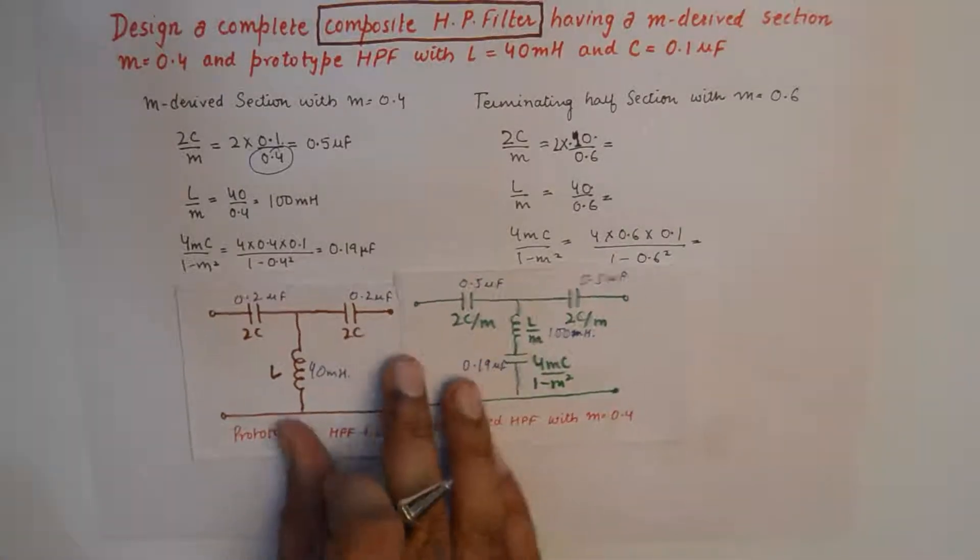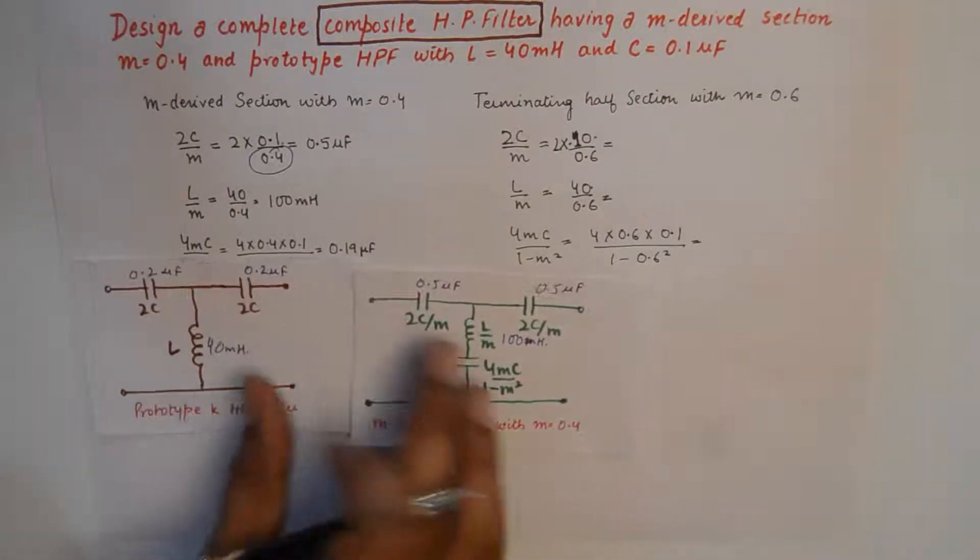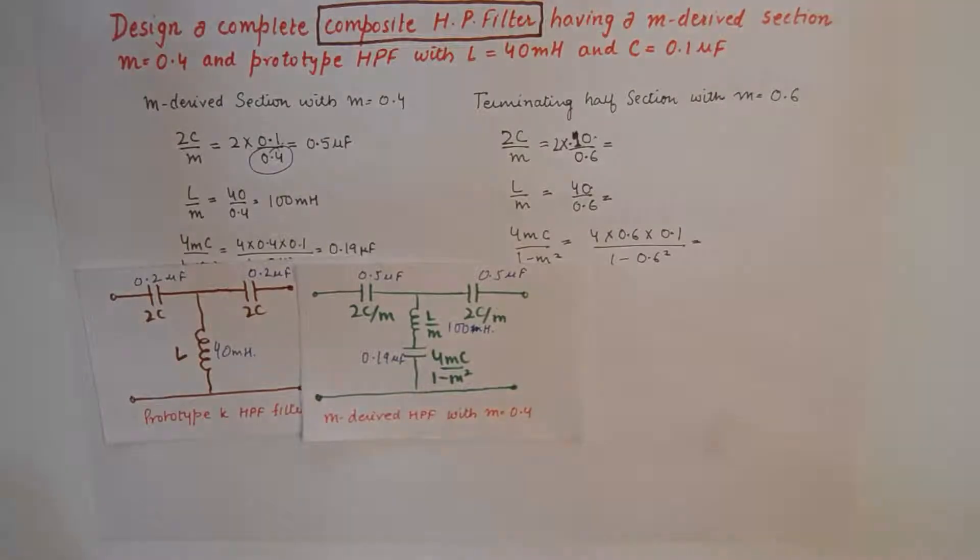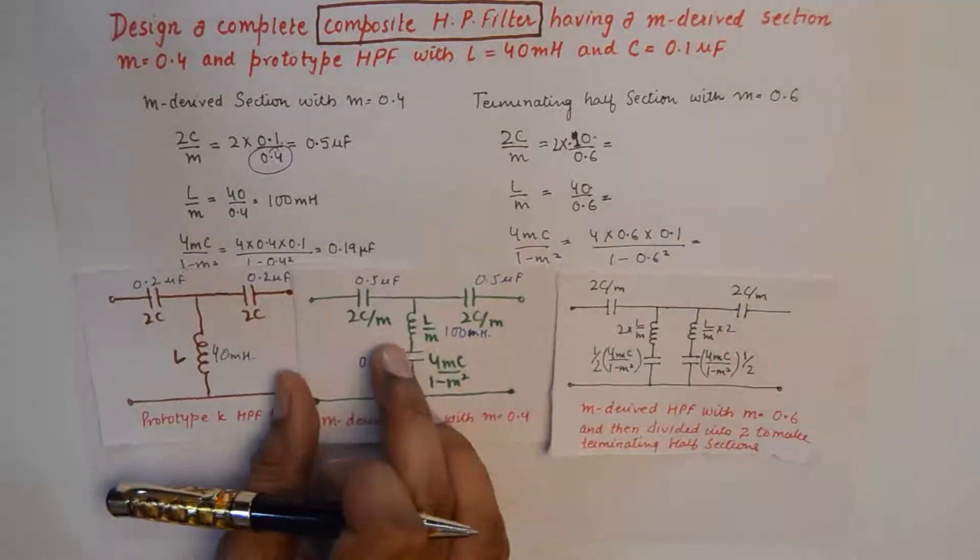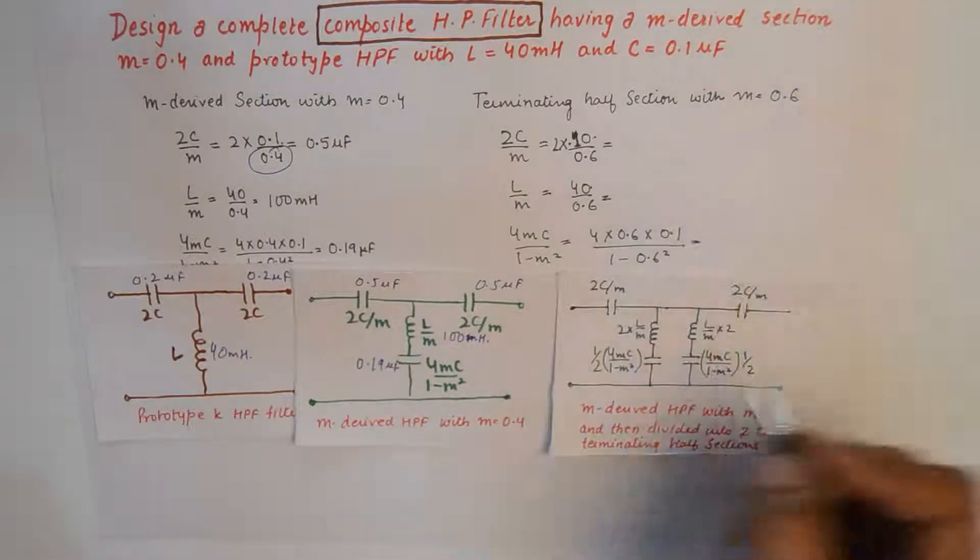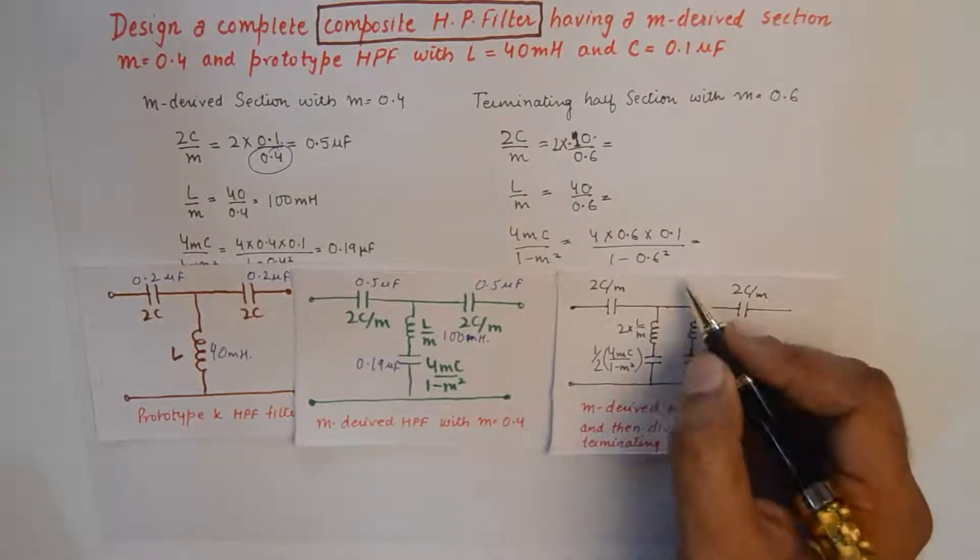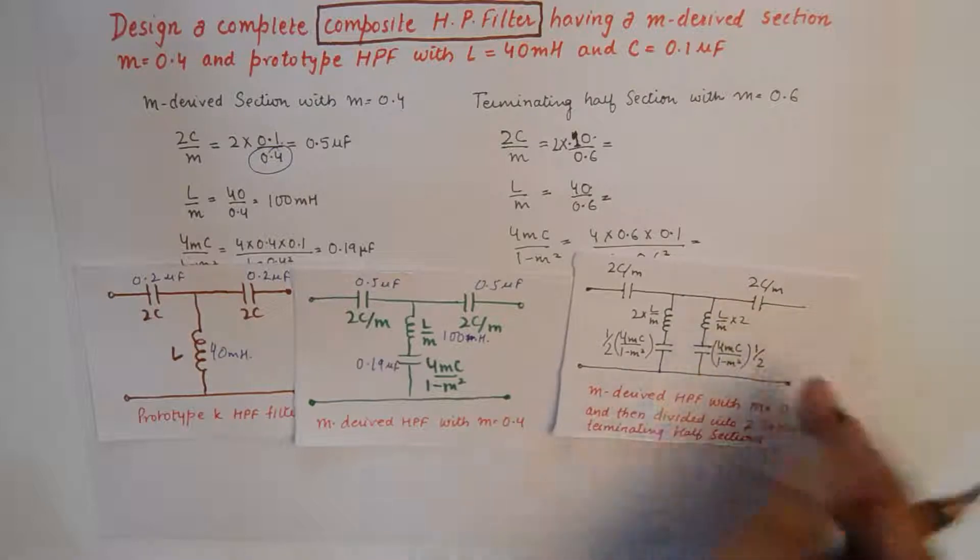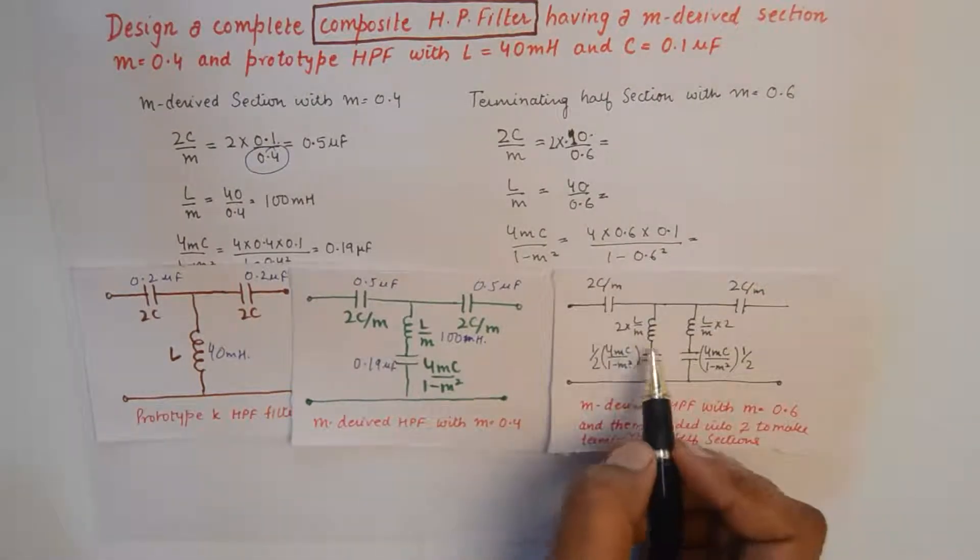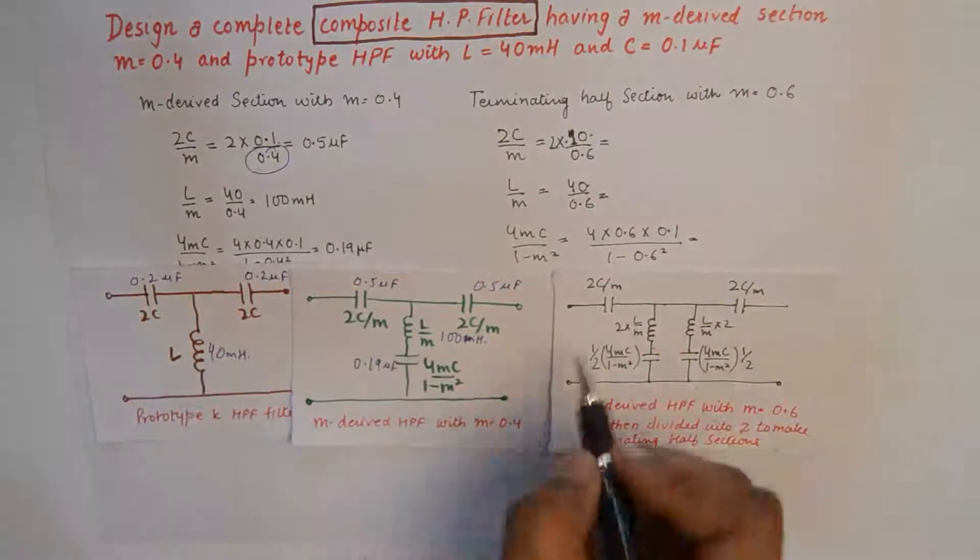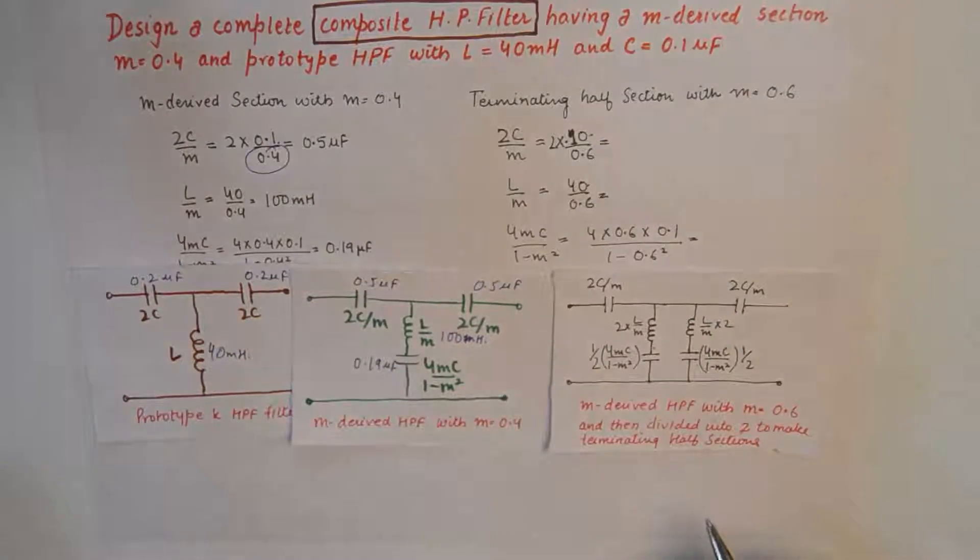Now finally we are left with designing one more M derived section, and that section will have M equal to 0.6 because we'll make terminating sections out of it. We'll tear this page from right from the center and we'll get two terminating half sections. This section will be placed here and this section will be placed here.